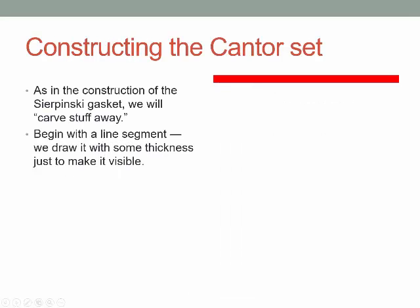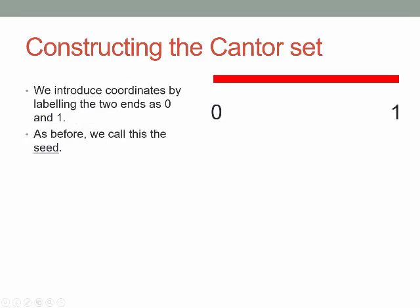As in the construction of the gasket that we already know, we're going to start with something and then take stuff away. What we start with here is very simple — we're just going to begin with a line segment. I've drawn it with some thickness so that you can see it, but it's just all the points on the line between two endpoints. We'll introduce coordinates by labeling the two ends as 0 and 1, so we have all the numbers from 0 to 1. We're going to call this the seed. We're not actually going to grow something from the seed — we're going to take stuff away from it.